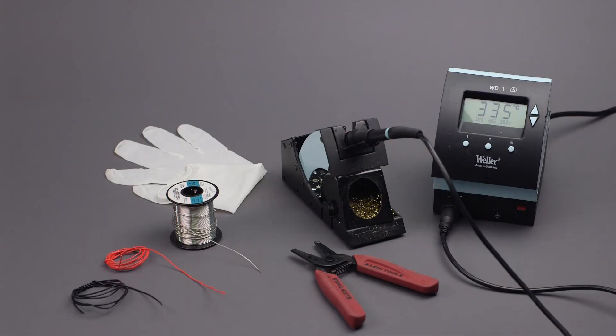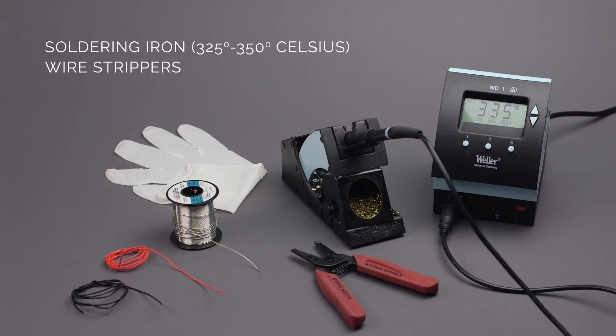In order to properly solder wires to the arrays, you will need a soldering iron set between 325 and 350 degrees Celsius, wire strippers, and lead-free solder in addition to the wire and array.